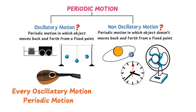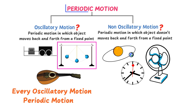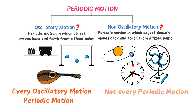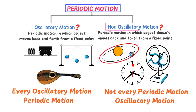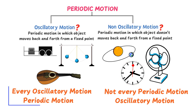From these examples we learn that every oscillatory motion is periodic motion. For example, the motion of a mass attached to an elastic spring is both periodic and oscillatory, and the motion of a simple pendulum is also both periodic and oscillatory. However, not every periodic motion is oscillatory — the motion of the Earth is periodic but not oscillatory, and the motion of the hands of a clock is periodic but not oscillatory.